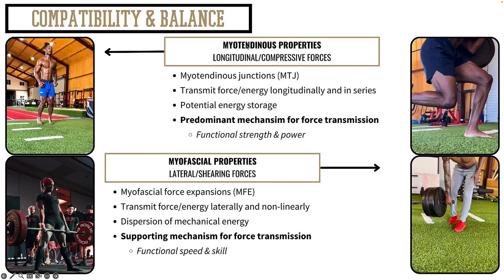If we broadly separate these as myotendinous properties versus myofascial properties, what we're looking for is not necessarily prioritizing one or the other for the sake of doing so. We're looking at having compatibility and balance between these two broad systems depending on who the athlete is, their anthropometrics and archetype, their injury history, and their sport demands. Different athletes with different sports and archetypes will have a difference in programming and how those programs are organized and implemented.